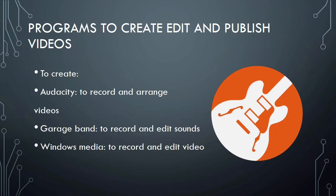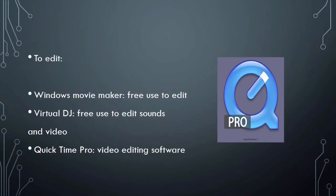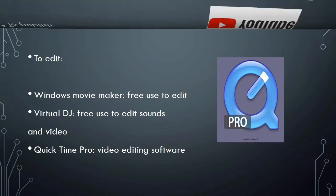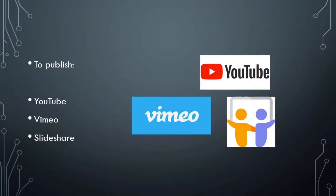Programs to create, edit, and publish videos: for creation — Audacity to record and arrange audio, GarageBand to record and edit sounds, and Windows Media to record and edit video. For editing — Windows Movie Maker and Virtual DJ are free to use, along with QuickTime Pro and other video editing software. For publishing — YouTube, Vimeo, and SlideShare; of the three, YouTube is the most convenient and the most well-known.